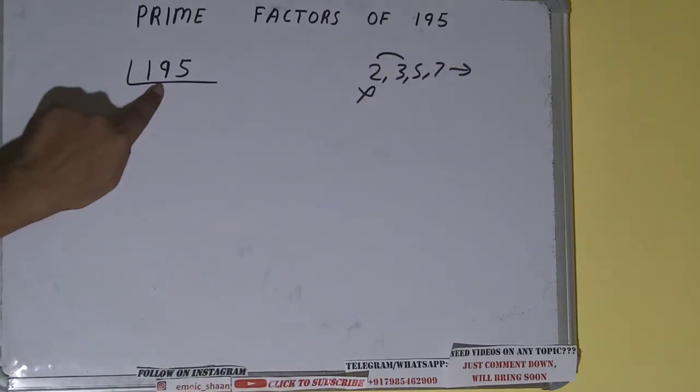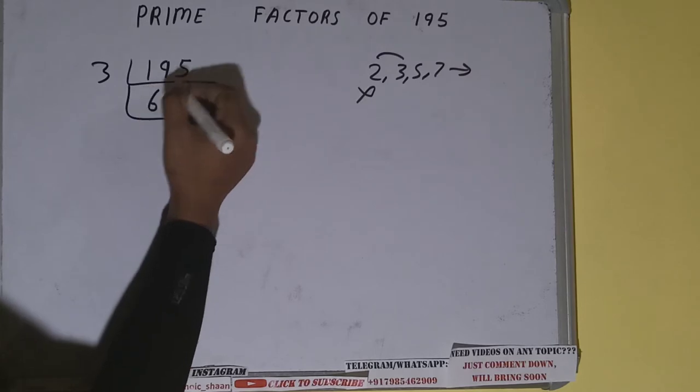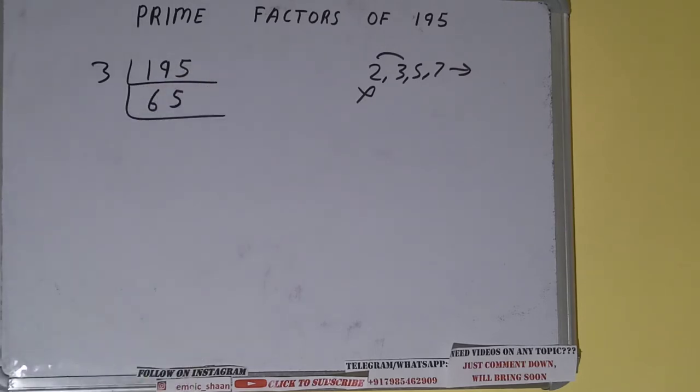By 3? We need to check: 3, 6, 18, 15. Yes, it is divisible by 3. So divide it: 3, 6, 18, 35, 15. We'll be having 65. Is 65 further divisible by 3? The answer is no. If you check, it is not divisible, so...